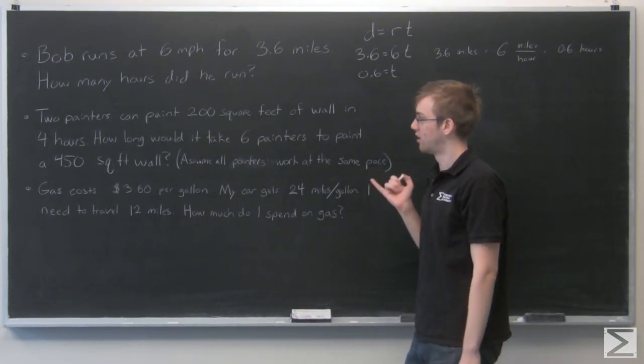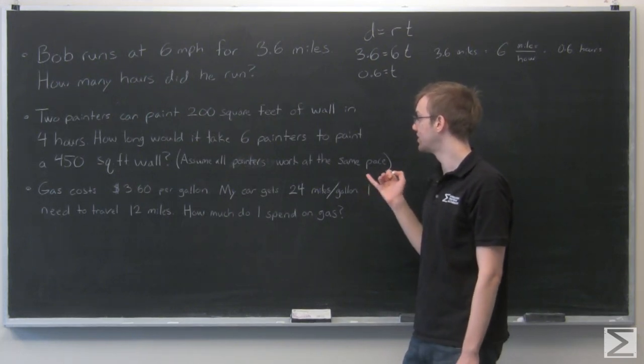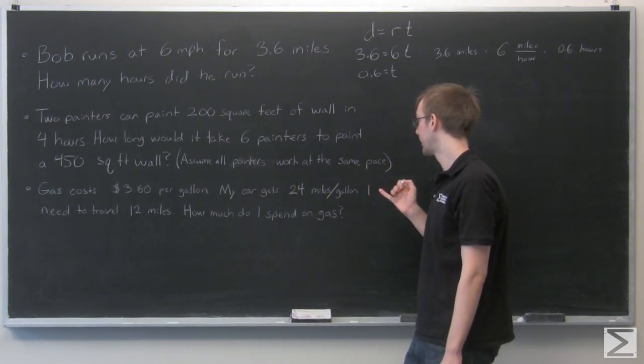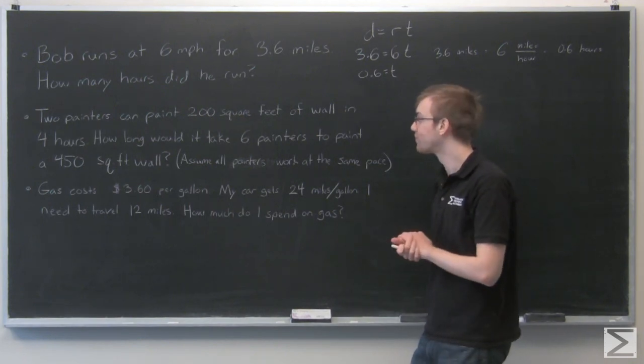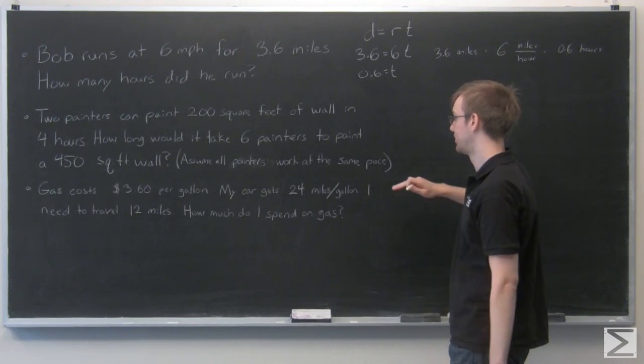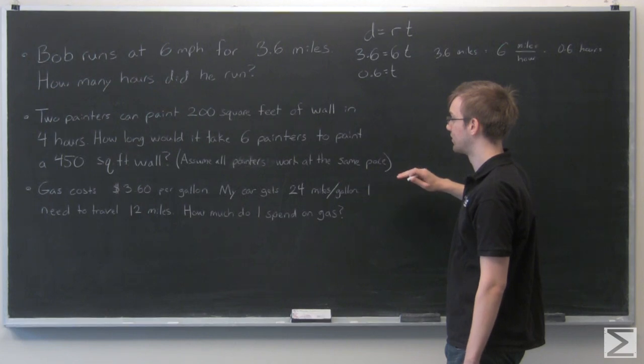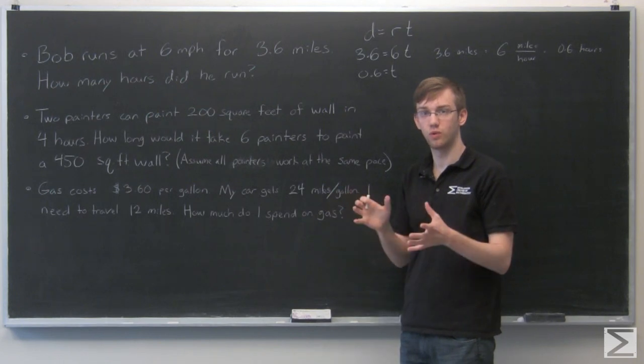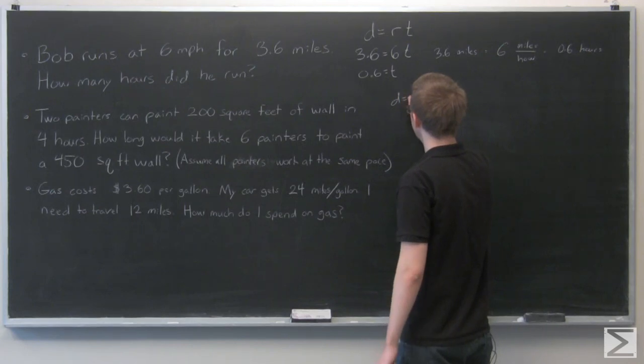Our next question: Two painters can paint 200 square feet of wall in four hours. How long would it take six painters to paint a 450 square foot wall? Assume all painters work at the same pace. So what's our rate here? We're not given our rate in this problem, but our rate would be the amount of wall they paint per amount of time. So again, looking at our formula, distance equals rate times time.